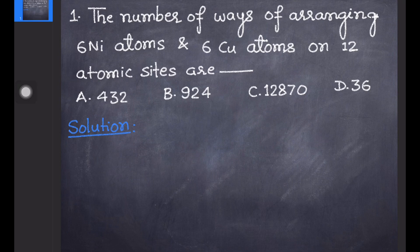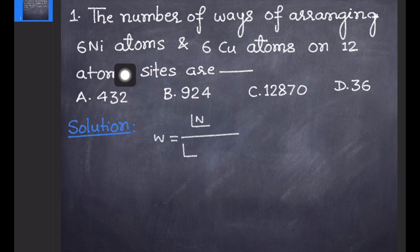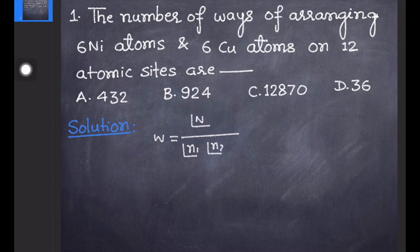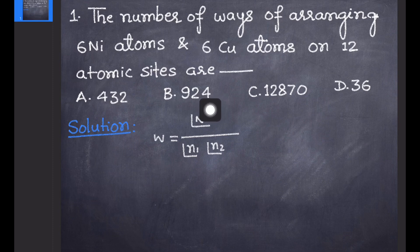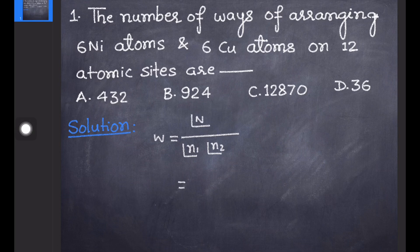Simply you can use the formula: the total number of configurations W is equal to factorial of the total number of sites available, divided by the factorials of the number of various atoms being arranged. So N1 is for nickel (six atoms) and N2 is for copper (six atoms). Capital N represents the total number of atomic sites, N1 is the number of atoms of one type, and N2 is the number of atoms of the second type.